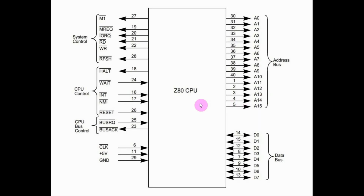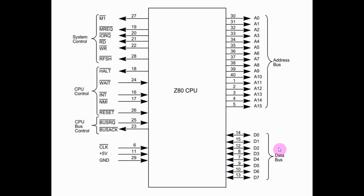The pinouts of the Z80 microprocessor are divided into four parts. We have the power lines, where the clock is input at pin 6. We have the 16 address lines connected to the address bus. The Z80 can access memory up to 2 to the power 16 memory locations. And we have the eight data lines to be connected to the data bus.